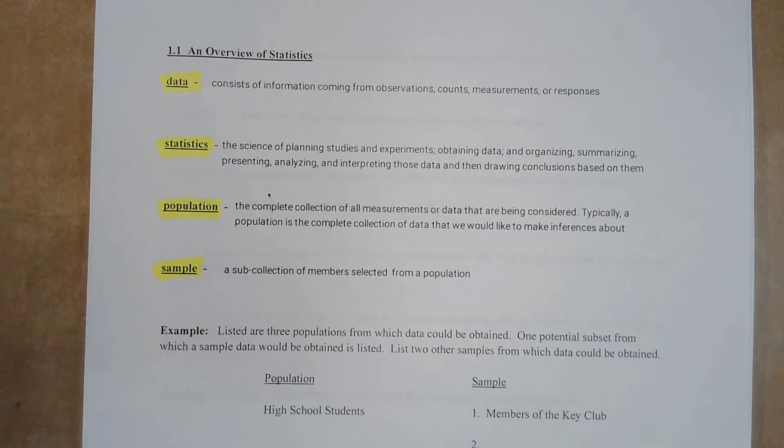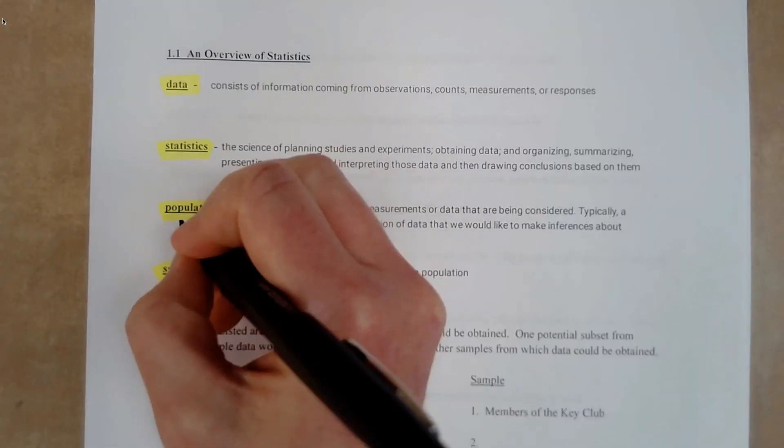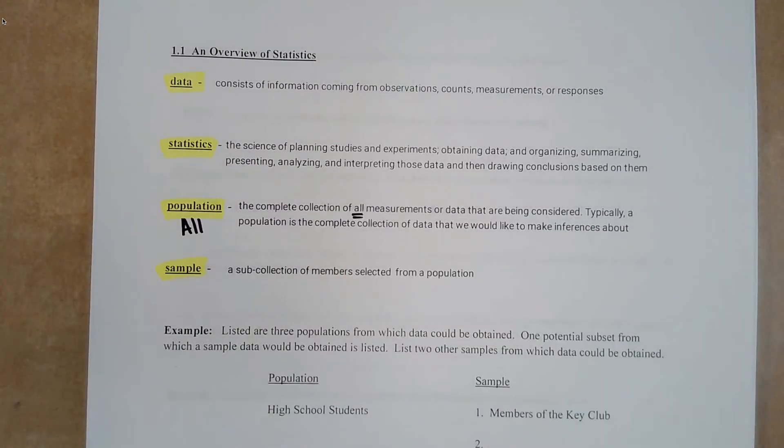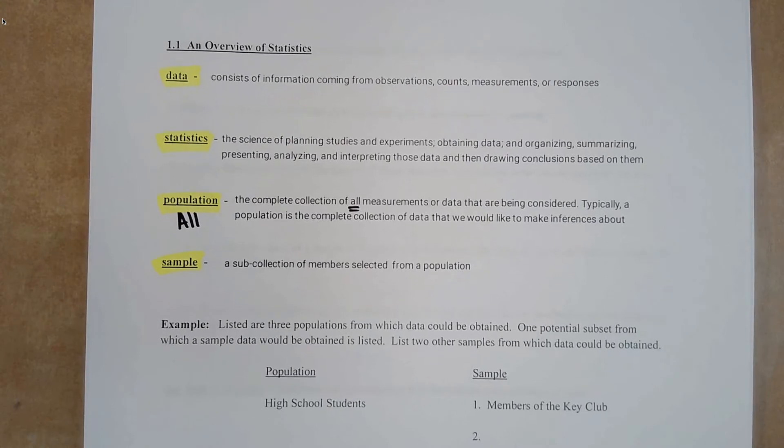We have two different types of ways of collecting data. We can collect the data of the whole population. So we would see that population is all, all of something. So anytime you see that word all, know that you're dealing with population measures.